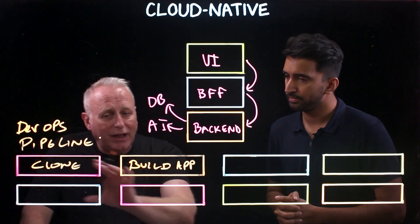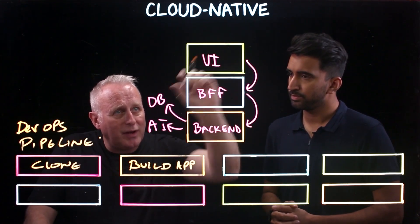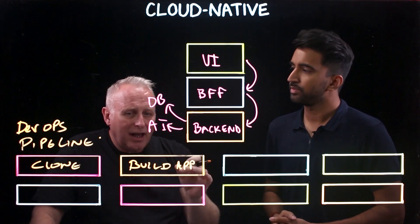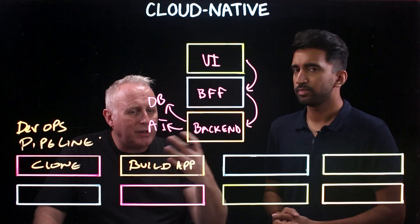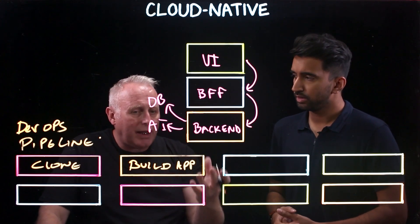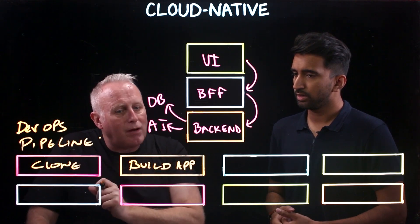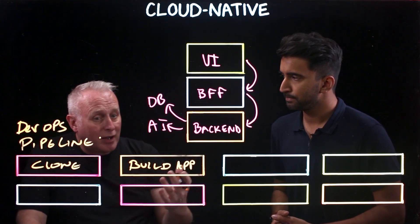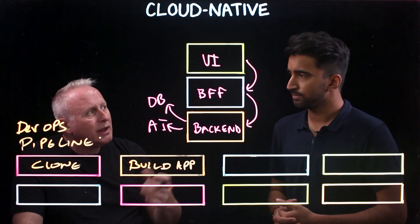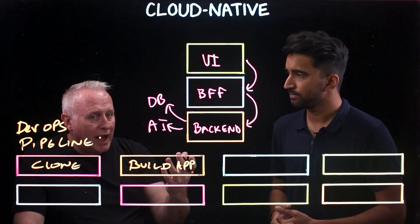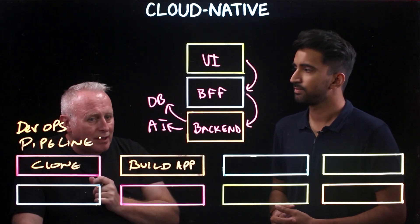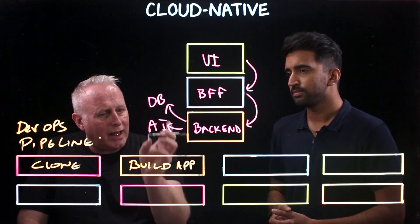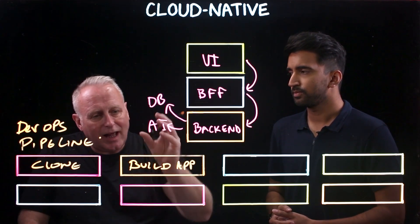You typically have one pipeline per component. If you're building a UI with React, you'd use webpack to build the TypeScript code and package it ready for runtime. With a Spring Boot app, you'd package using Maven or Gradle. With Node.js, you'd use NPM. This part of the pipeline is about packaging the source code in the way it needs to be run.